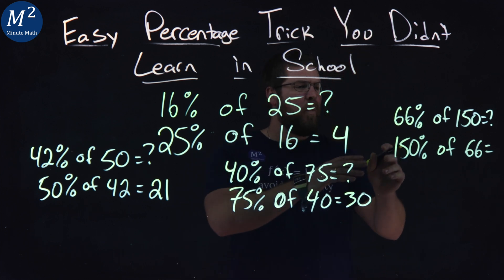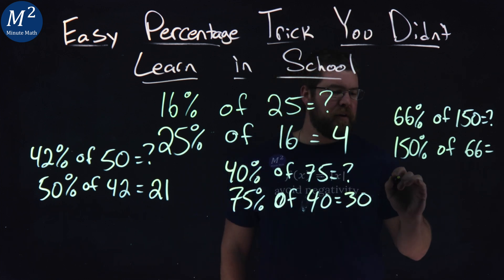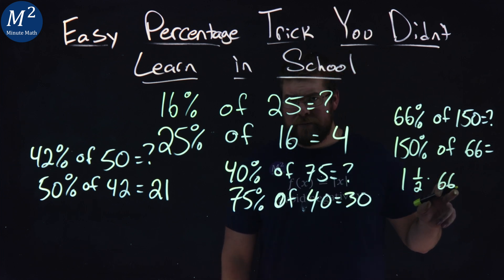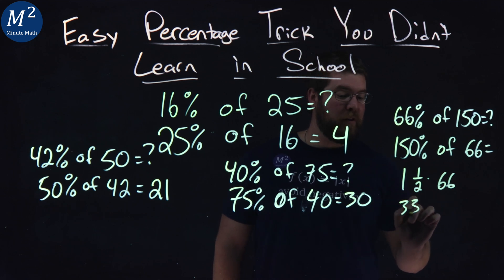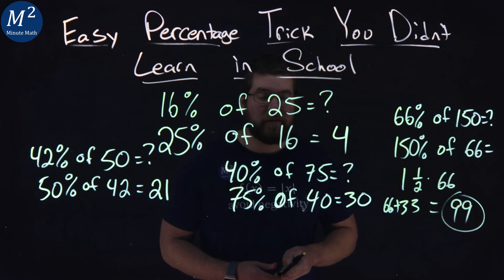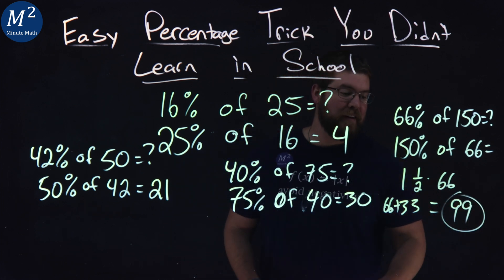What does that equal? Well, 150% is like one and a half times 66. Well, half of 66 is 33, right? So we have 33 plus 66, which is 99. And so 66% of 150 is 99.